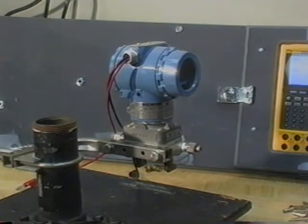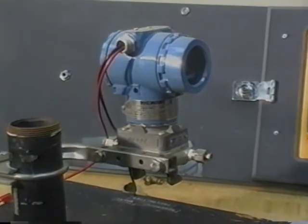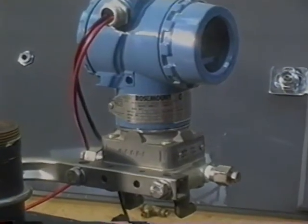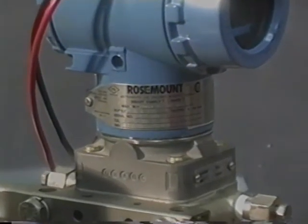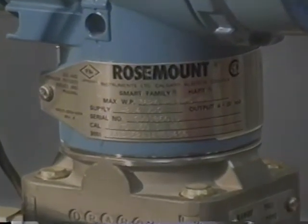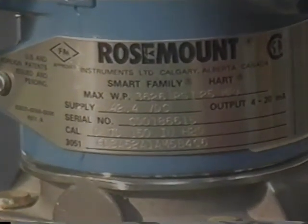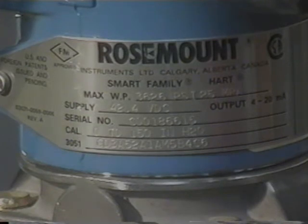The transmitter we're going to use is a Rosemount 3051 differential pressure transmitter. It's been calibrated at the factory to zero to 150 inches of water and has an output of 4 to 20 milliamps. We're going to use the HART communicator to rearrange within this zero to 150 inches of water for our needs.